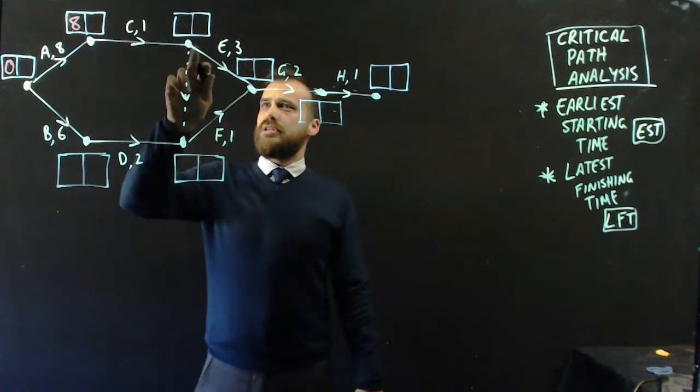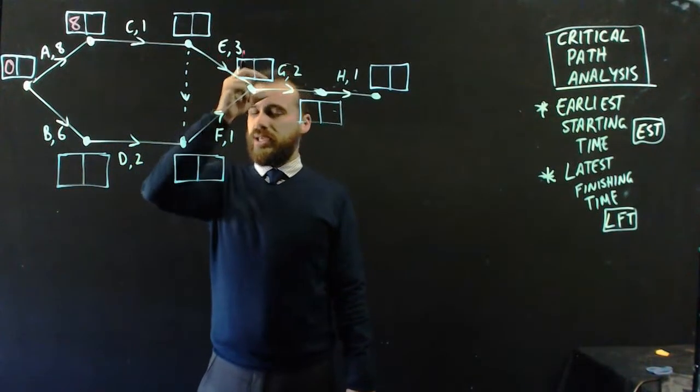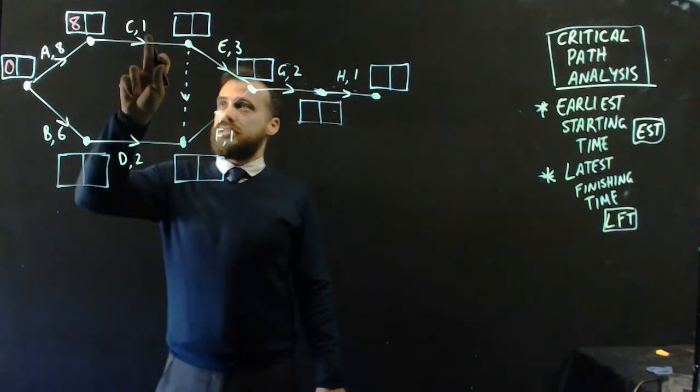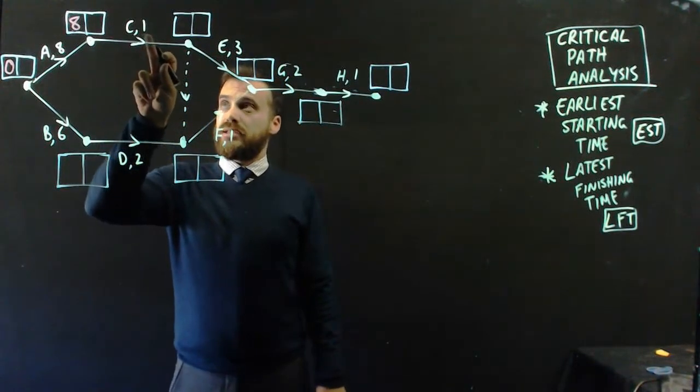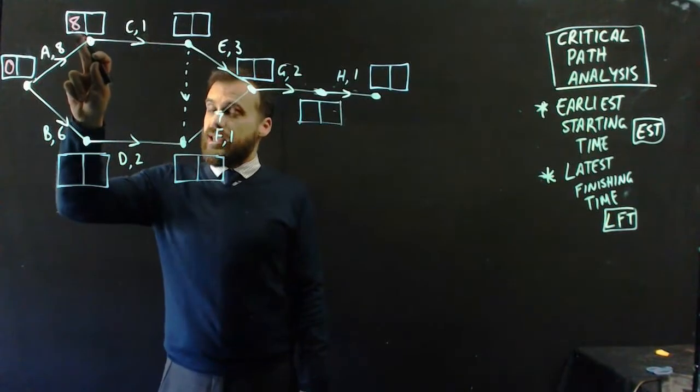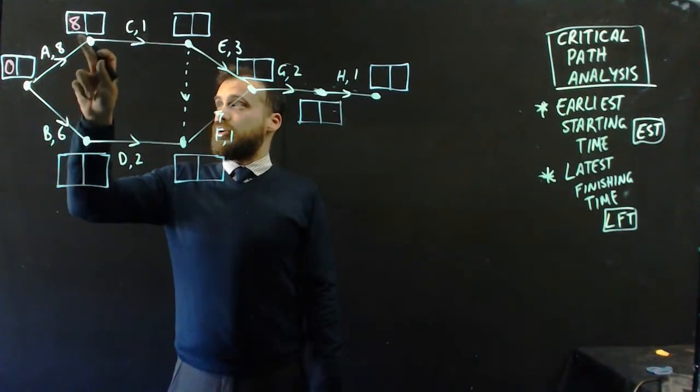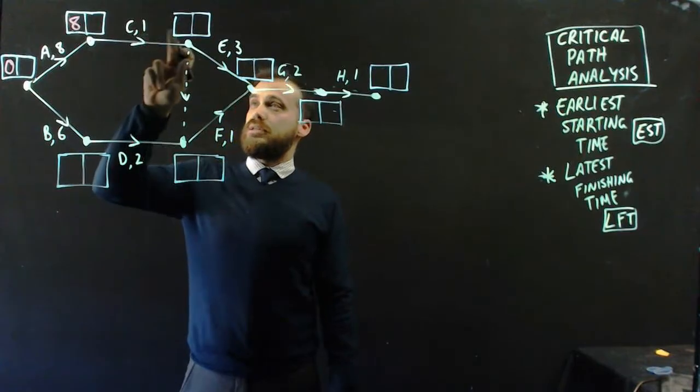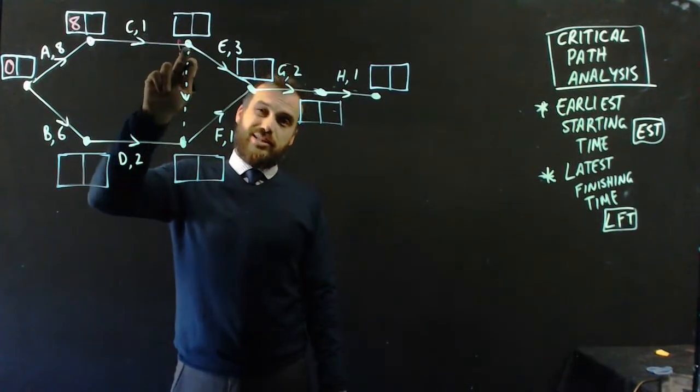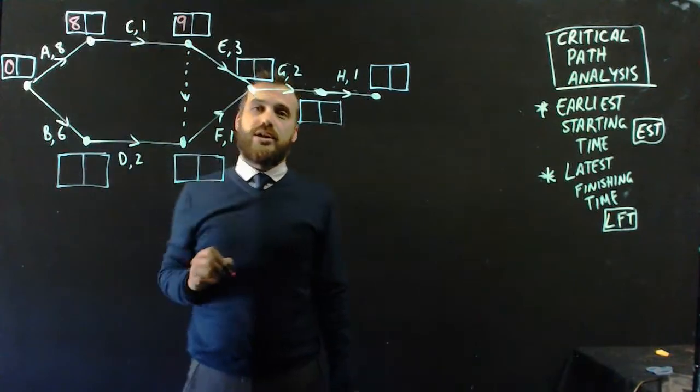Now what's the earliest that E can start? Well, E has to wait until C is finished. Now C takes one hour. C can't start until eight hours has elapsed. So eight plus one is nine. It's going to take us nine hours to get to this point, so we can put a little nine in here.